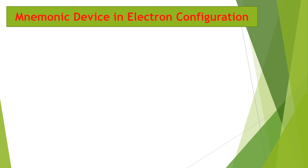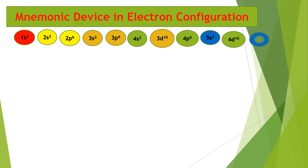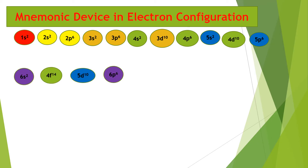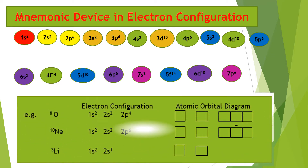Mnemonic device in electron configuration: 1s2, 2s2, 2p6, 3s2, 3p6, 4s2, 3d10, 4p6, 5s2, 4d10, 5p6, 6s2, 4f14, 5d10, 6p6, 7s2, 5f14, 6d10, 7p6. Observe how to fill up orbitals with electrons showing opposite spins.